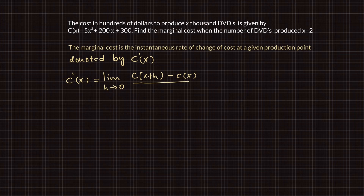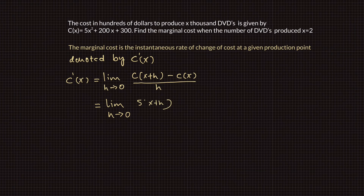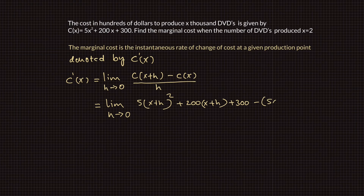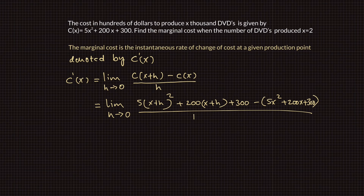c prime of x is the derivative of c of x, which is equal to the limit of c of x plus h minus c of x divided by h as h goes to 0. c of x plus h is obtained by plugging x plus h into the expression 5x squared plus 200x plus 300, minus c of x divided by h.